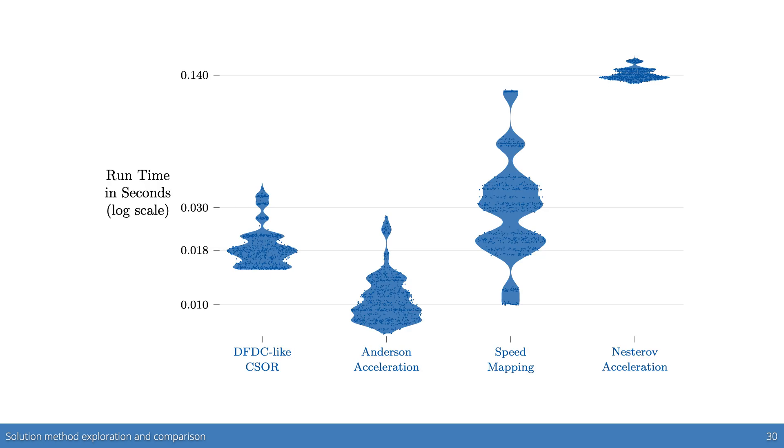We also performed some preliminary benchmarking comparing the DFDC-like solver with various external solvers implemented in other Julia packages. We found that despite the inherent efficiency of the DFDC-like solver, for the tight tolerances required for gradient-based optimization, some external solvers, for example an Anderson acceleration method, outperformed it for this example case, lending further credence to our developing an alternate solution method.